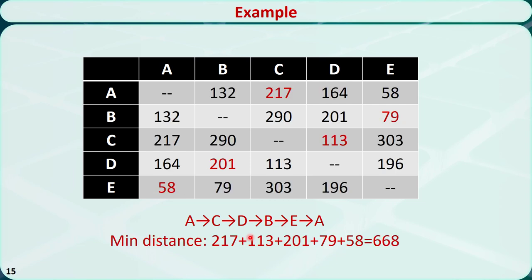The total distance of this tour is 668. Because this is the symmetric traveling salesman problem, another optimal solution is just going in the reverse order: A, E, B, D, C, A. The total distance is still 668.